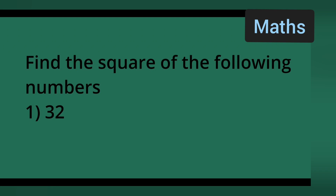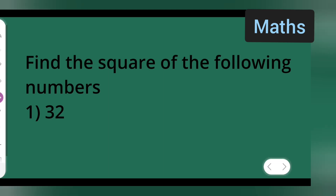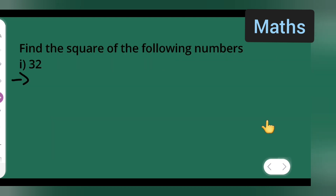In today's class of mathematics, the question is taken from class 8 mathematics on squares and square roots. We have to find the square of the following numbers. The first one is 32 — so we need to find the square of 32. Write down 32 squared.